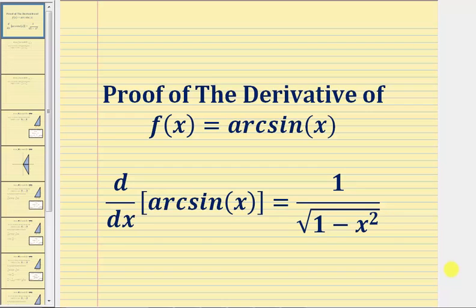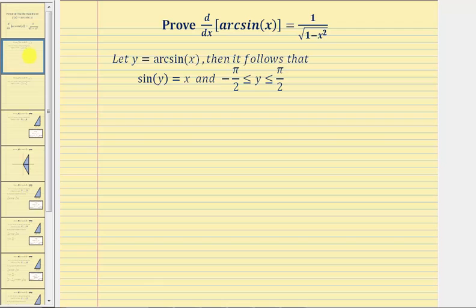To begin our proof, we'll let y equal arc sine x. Notice in this equation, x would be the sine function value and y would be the angle. Therefore it follows that we can rewrite this equation as sine y equals x, where y, the angle, would be on the closed interval from negative pi over two to positive pi over two.